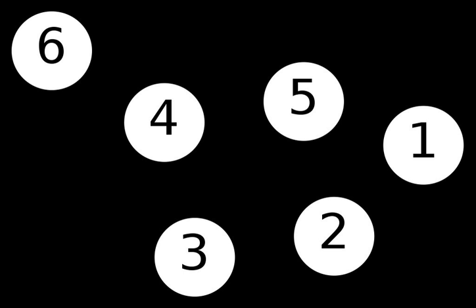A quiver or multidigraph is a directed multigraph. A quiver may have directed loops in it. Thus, a quiver is a set V of vertices and a set E of edges,